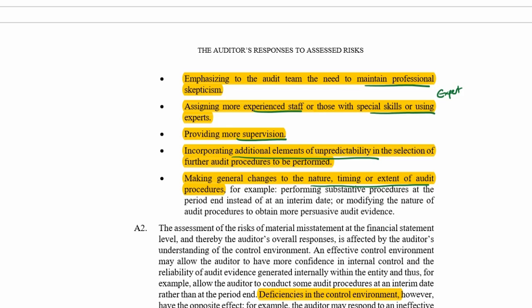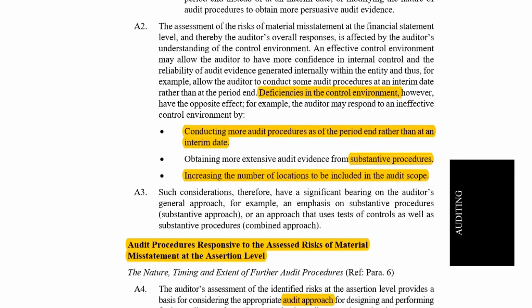If there is a risk at the financial statement level that the control environment is weak, the general changes to nature, timing, and extent of audit procedures would be to follow a substantive approach instead of a combined approach, because you don't want to test controls if the control environment is weak. With deficiencies in the control environment, you might do more audit procedures at period end, more substantive procedures, and increase the number of locations included in the audit scope.